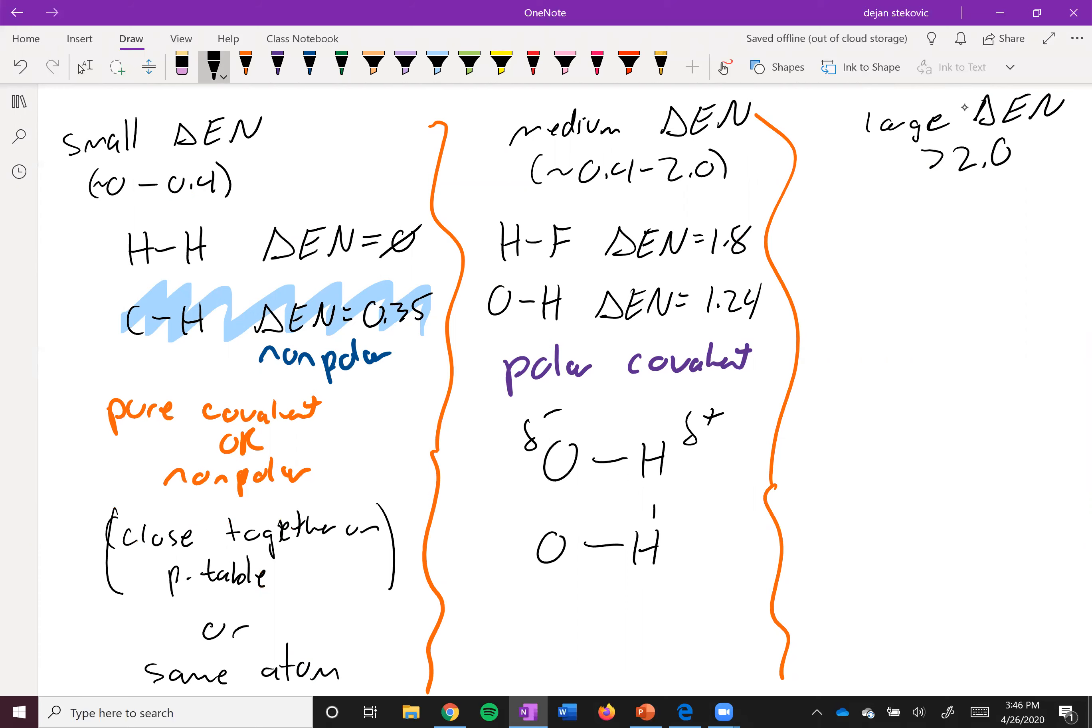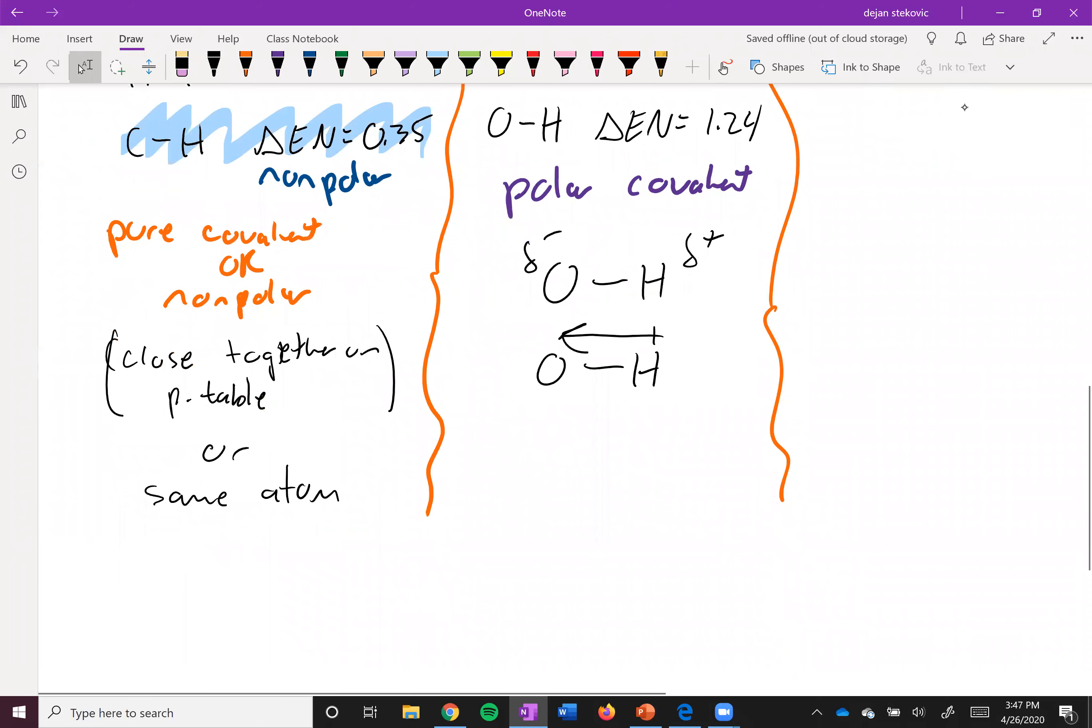Or you can draw a dipole arrow that looks like that. Or you can even draw your own little electron density map, right? So you could draw the electrons more on the oxygen than the hydrogen. Either of that works.